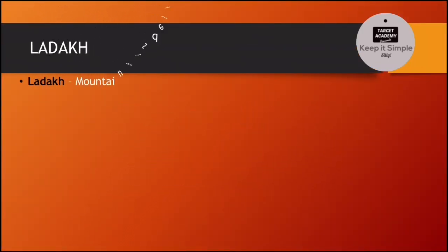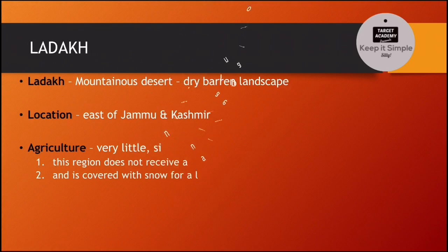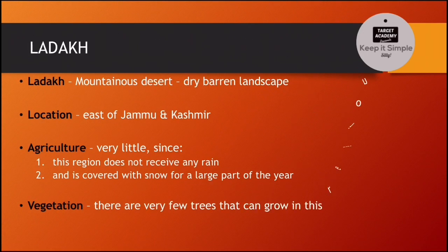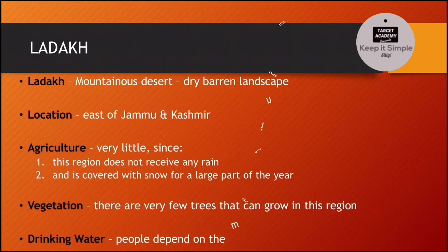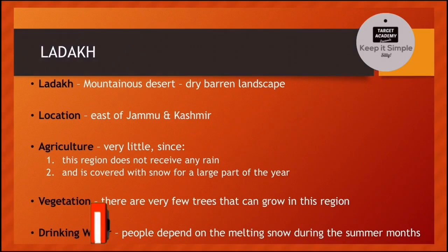First of all, Ladakh. Ladakh is a mountainous desert with a dry landscape located east of Jammu and Kashmir. Agriculture here is very low for two reasons: there is very little rainfall in this region, and for a large part of the year, this region is covered with snow. Vegetation is also very low — there are very few trees that can grow here. People melt snow to fulfill their drinking water requirements.